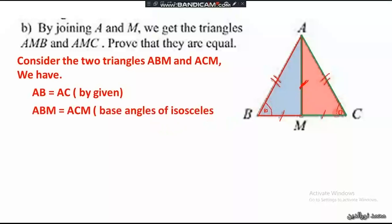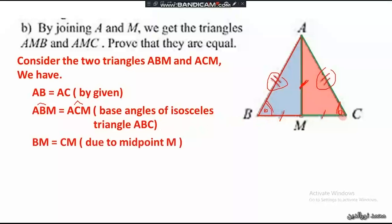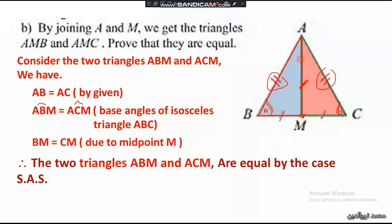Consider the two triangles ABM and ACM. We have AB equals AC by the given. Angle B equals angle C because triangle ABC is an isosceles triangle with two equal sides, so its base angles are equal. These angles are the base angles of isosceles triangle ABC. We also have BM equals CM since M is the midpoint of BC.